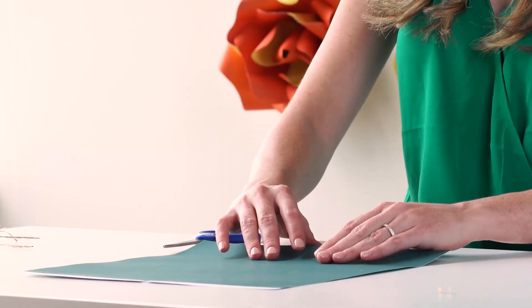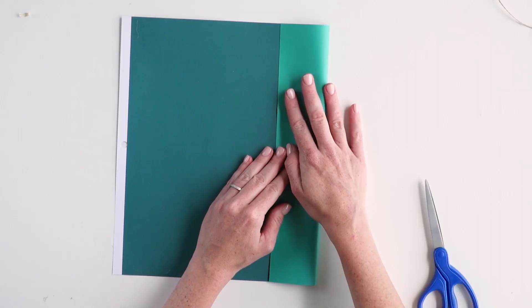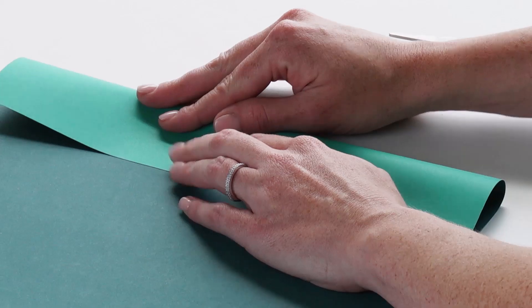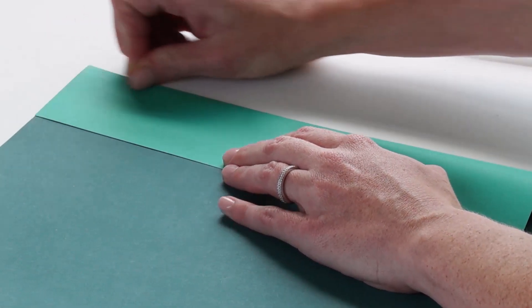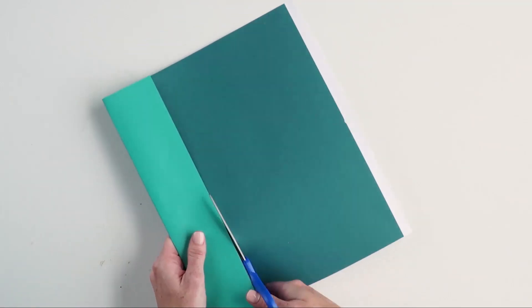And now we're ready to make our pom-pom flower. This is such a fun and easy flower. You're going to take your paper and fold it on itself. Depending on how big you want your pom-pom will depend on how wide you want your paper. We don't want them very big, so we're going to do about an inch and a half to two inches of a fold over, and we're going to cut it right along the line.